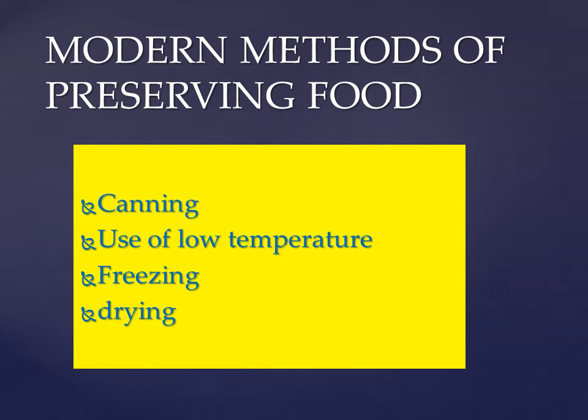Pupils, we move to number three: freezing. Special machines called freezers are used to prevent bacteria from growing and multiplying. Most refrigerators have a distinct cabinet called the deep freezer. The food is stored at a very low temperature, below 0 degrees Celsius.